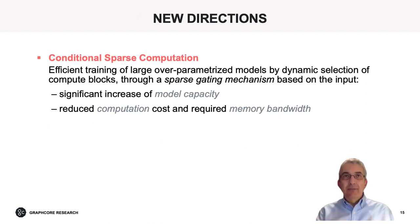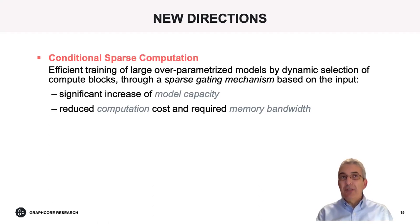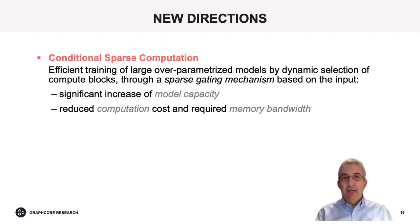Finally, a new direction we are planning to address is conditional sparse computation, relying on a sparse gating mechanism to dynamically select different compute blocks out of a very large model based on the input. This has the attractive advantage of allowing a very large model with the associated increase in model capacity, but with a reduced computation cost — since only a subset of the model's blocks are called for execution at each step during training — and with an associated low memory footprint, since each block represents only a small percentage of the overall parameters of the large model.